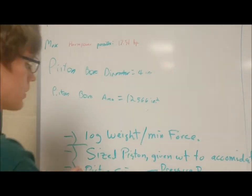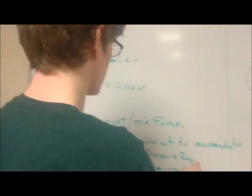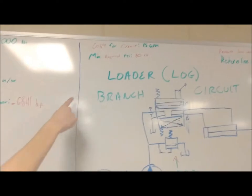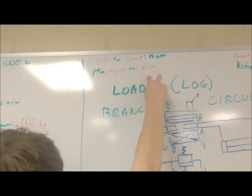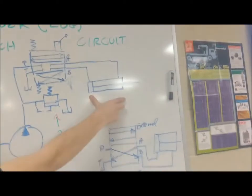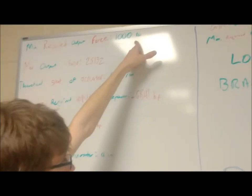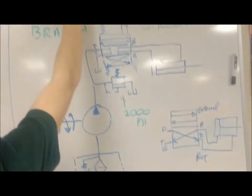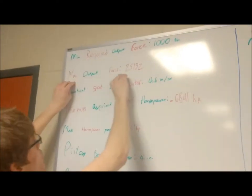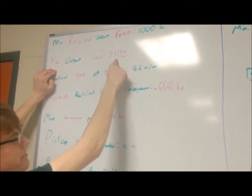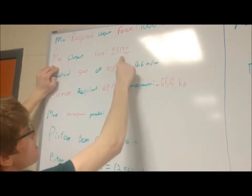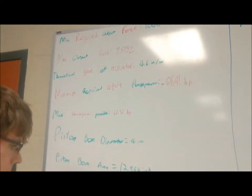And with the piston size, we were able to calculate the minimum pressure that we wanted to have to be 80 psi. That's about as much as this needs to output a force of 1,000 pounds. If it were to go to 2,000 psi instead of 80 psi, the maximum output force would be 25,132 pounds.